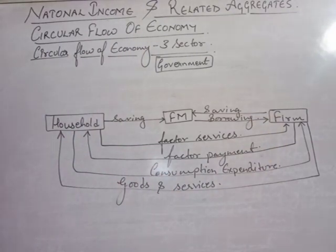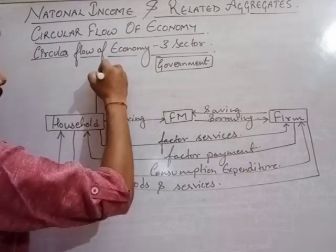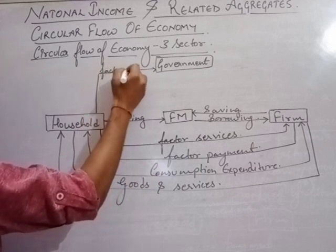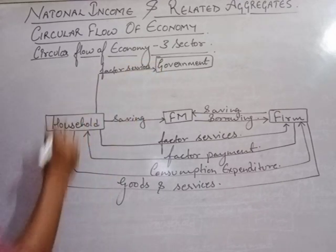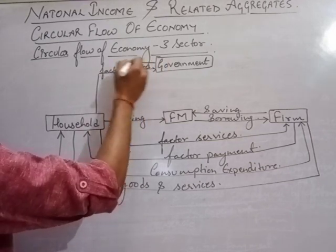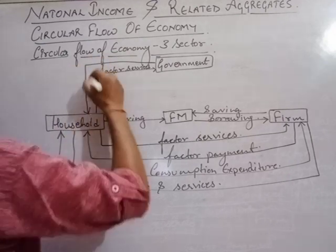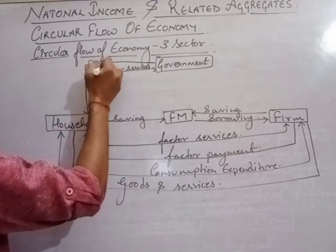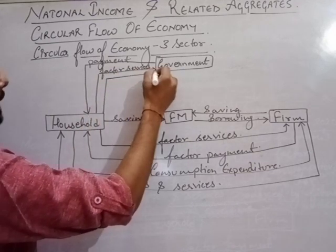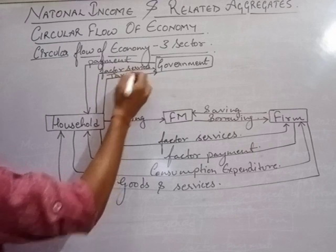The household provides factor services to the government. In return, the government provides factor payment to the household. The household, in return, pays taxes to the government.